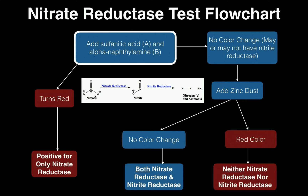Nitrate reductase converts NO3⁻, or nitrate, into NO2⁻, nitrite. Notice the difference between these two words: nitrate ends in A-T-E whereas nitrite ends in I-T-E. One way to remember that nitrate comes before nitrite is that A comes before I in the alphabet. Nitrate is technically being reduced into nitrite — it's a redox reaction.